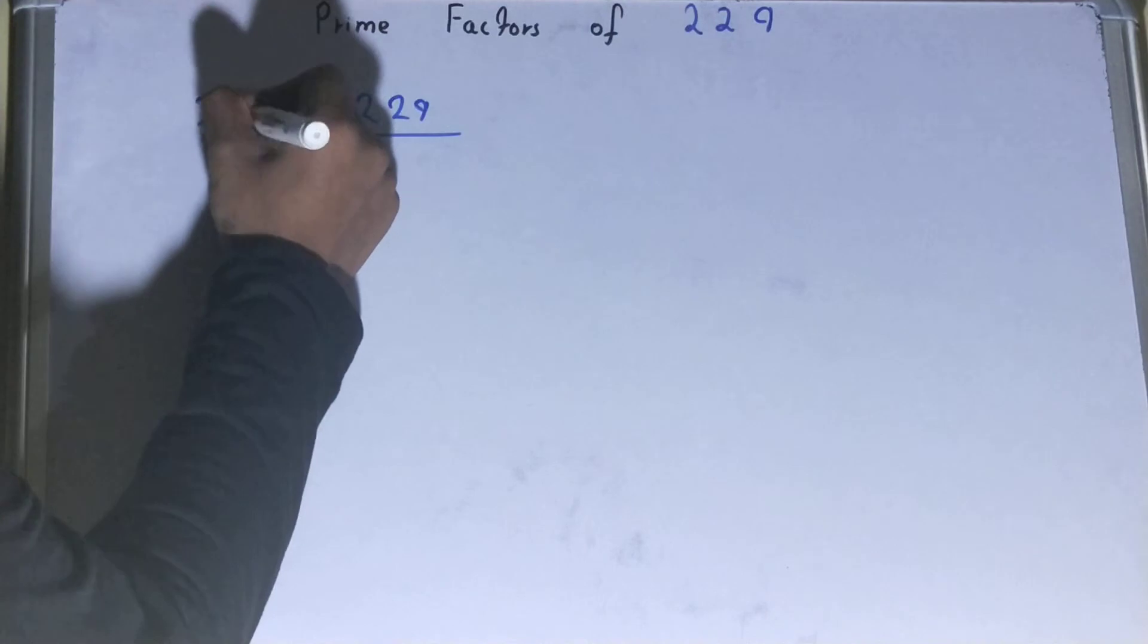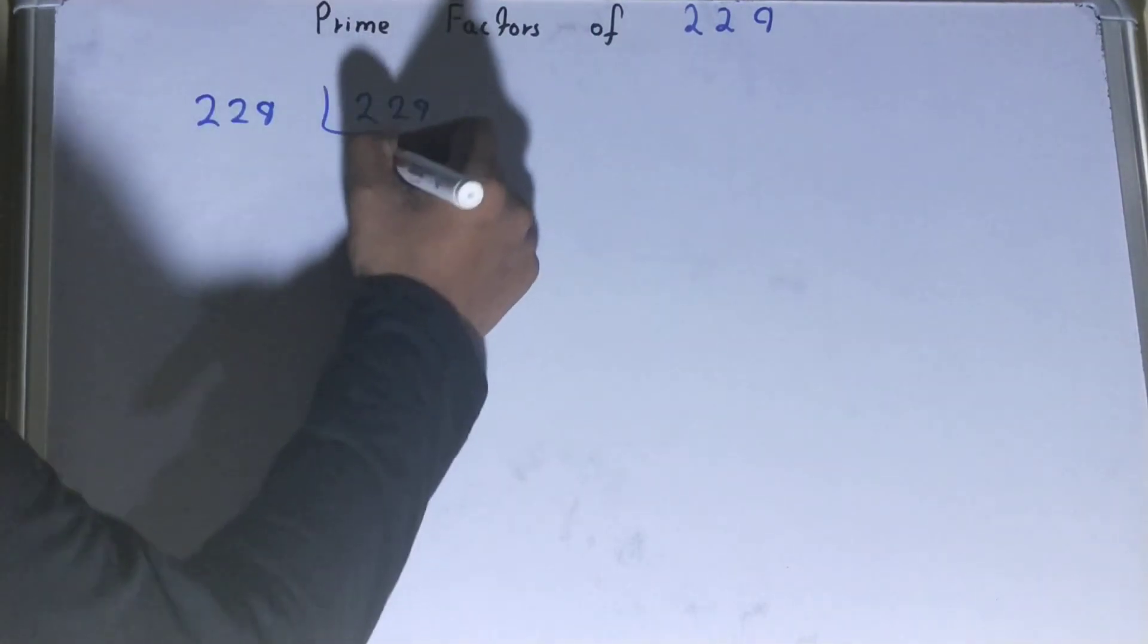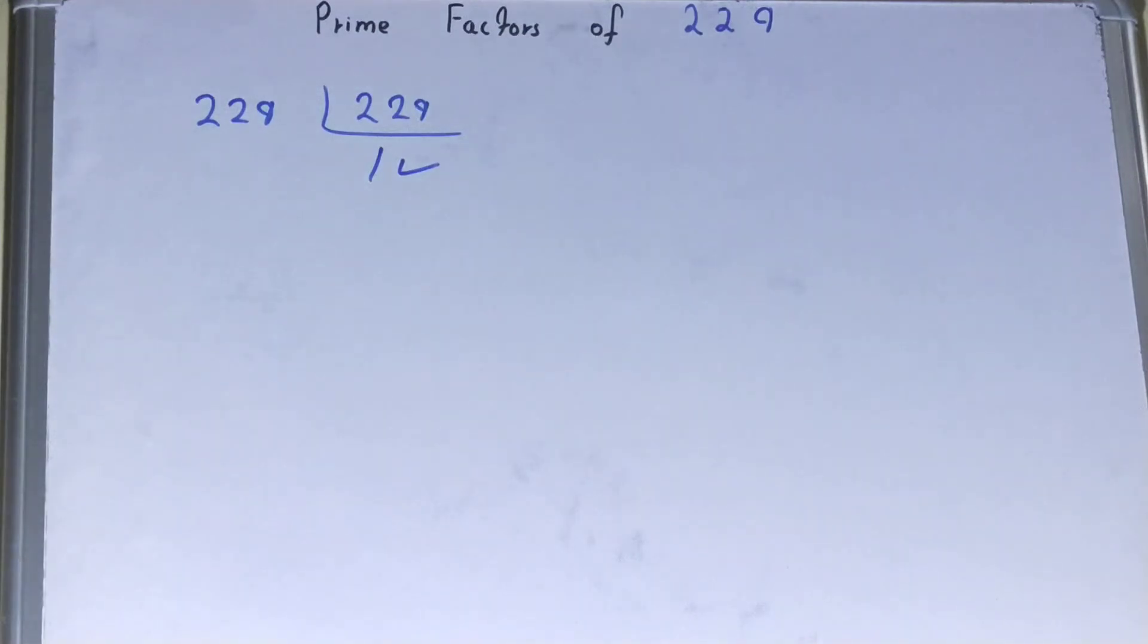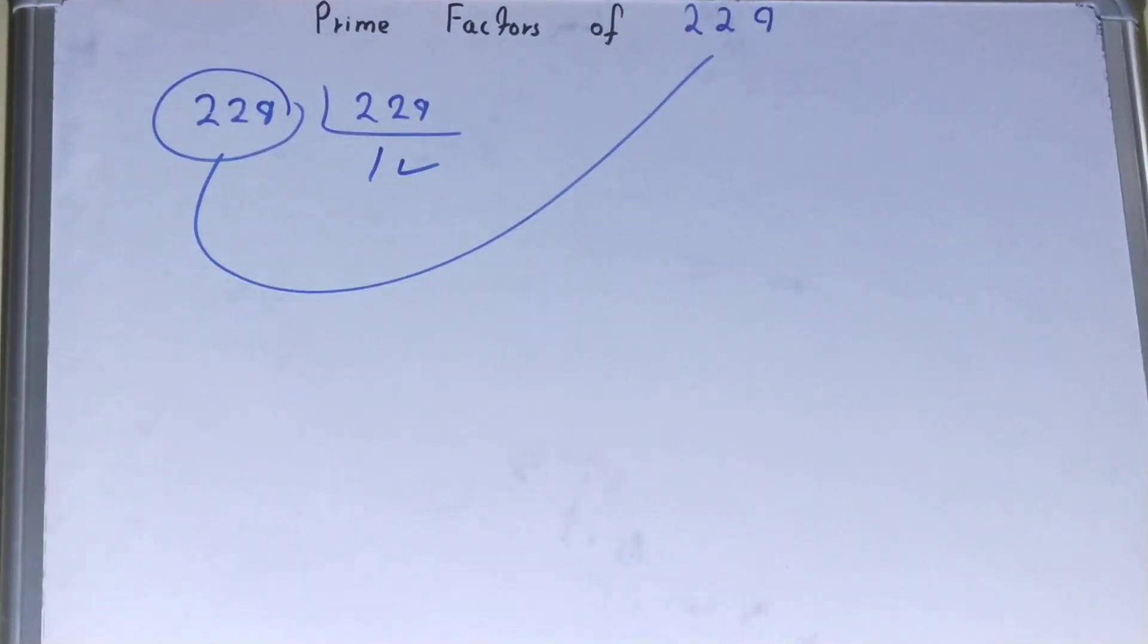divisible by itself, so we need to place this 229 on the left-hand side also. Once you will do so, you will be left with one, and once you're left with one, the work is done. And whatever you have on the left-hand side will be the set of prime factors for the number 229.